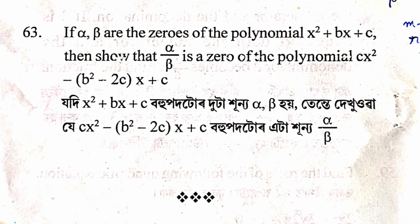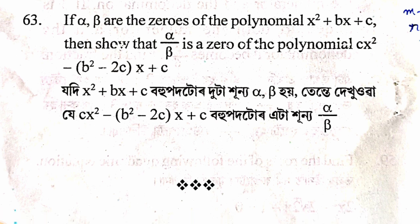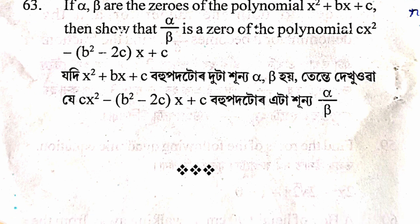The question states: If α, β are the zeros of the polynomial x² + bx + c, then show that α/β is a zero of the polynomial cx² - (b² - 2c)x + c. So if x² + bx + c has zeros α and β, then we need to show that cx² - (b² - 2c)x + c has α/β as a zero.